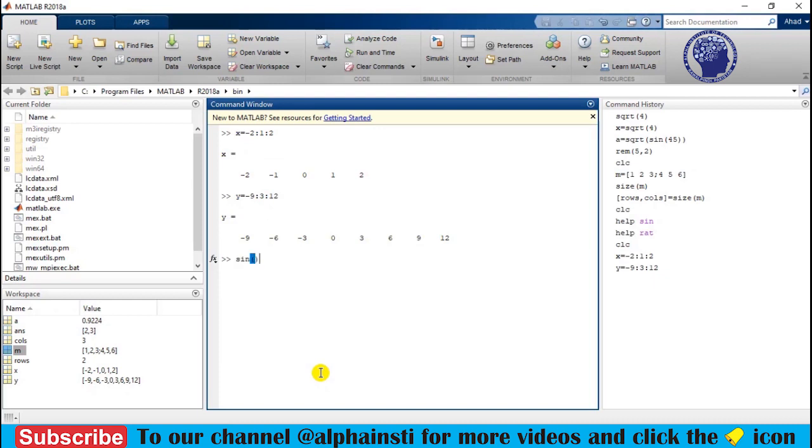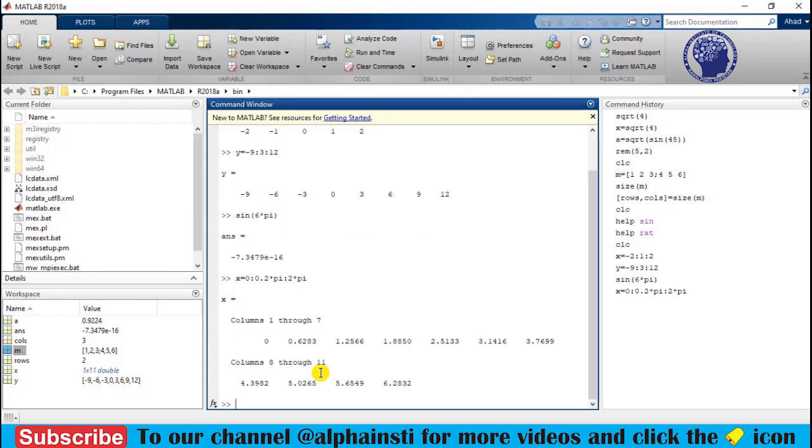Sin(6π) is very simple. You type sin and 6 multiply by π like this. And if you want to calculate the cos(θ) and theta is from 0 to 2π, then it will be like this. First, you have to assign a variable like x, from 0 with a step of 0.2π and from 0 to 2π.